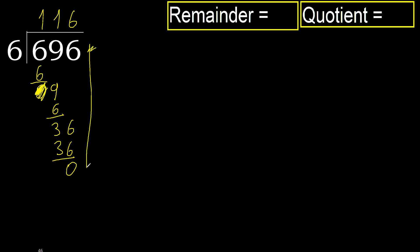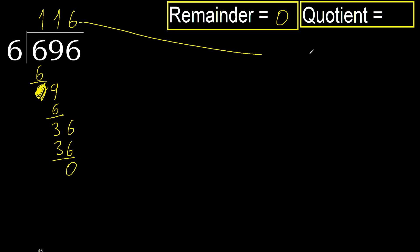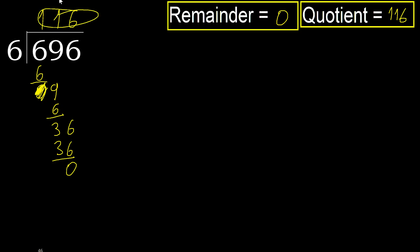There is no next number, therefore finish it. The remainder is 0. Therefore, 696 divided by 6 equals 116.